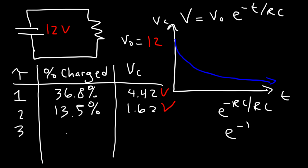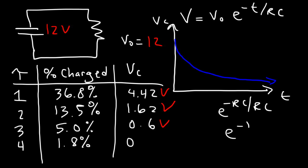After three time constants the capacitor is 5% charged — 95% discharged — with a voltage of 0.6 volts. After four time constants it has 1.8% of its initial charge, so the voltage is 0.22 volts. After five time constants it is 99% discharged, retaining only 0.7% of its original charge with a voltage of 0.08 volts. At that point we can say the capacitor is for the most part fully discharged.